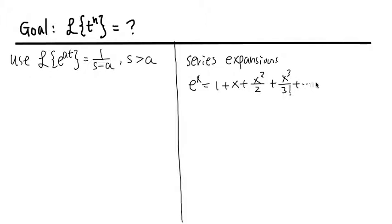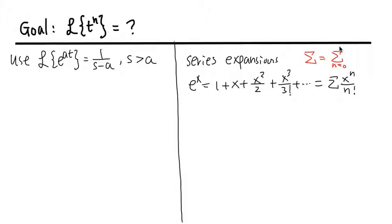We can write this in sigma notation as sigma x to the n power over n factorial. When I write sigma, I mean the sum when n goes from 0 to infinity — I'll save steps by not writing that every time, since that's the main series we are going to use.